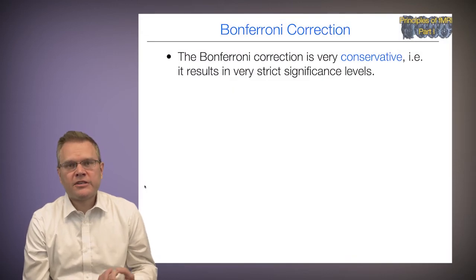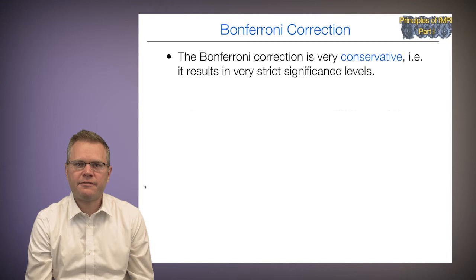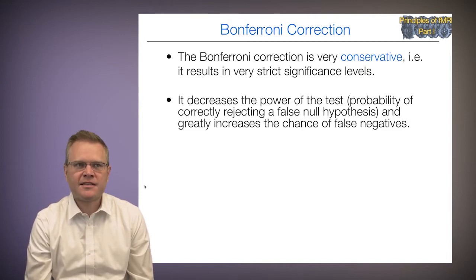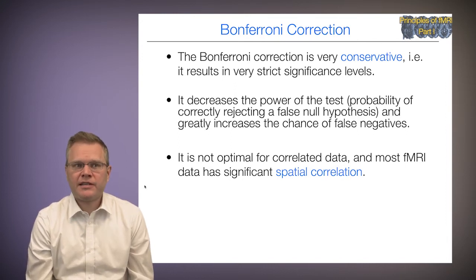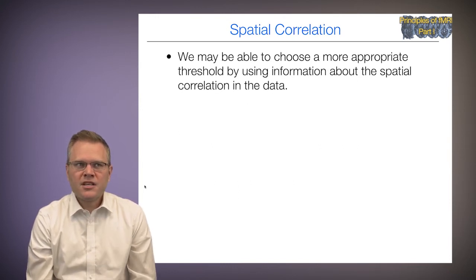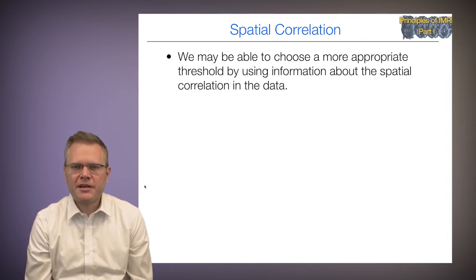This is very stringent control over the false positive rate. However, if there are true activations in the grid, it will be very hard to detect them — there's a trade-off between detecting activations and controlling the family-wise error rate. The Bonferroni correction is conservative, resulting in very strict significance levels, which decreases test power and greatly increases the chance of false negatives. It's also not optimal for correlated data, and most fMRI data has significant spatial correlation, meaning the number of independent tests is much fewer than the number of voxels.